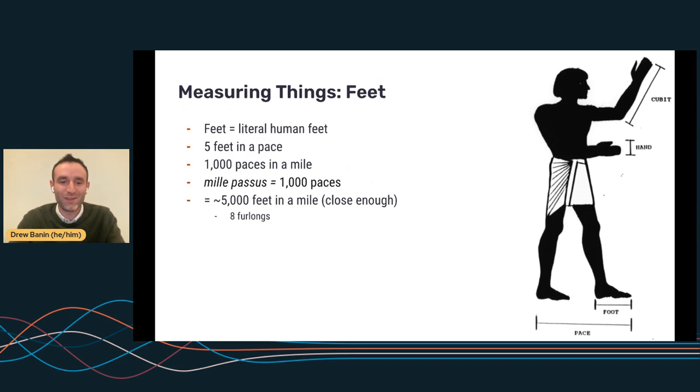And literal human feet were for a very long time how we measured distances. It turns out there are five feet in a pace and a thousand paces in a mile. And so the word mile actually comes from this Latin term, mile passus. So a thousand paces. And so five feet in a pace with a thousand paces gets you 5,000 feet, which as we know, is not actually what a mile is, at least not today. So what happened there?